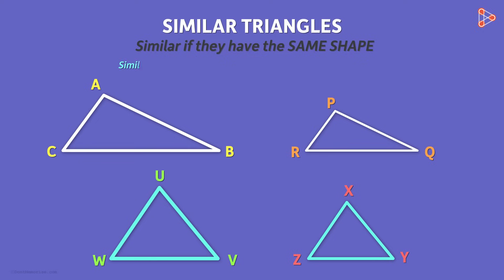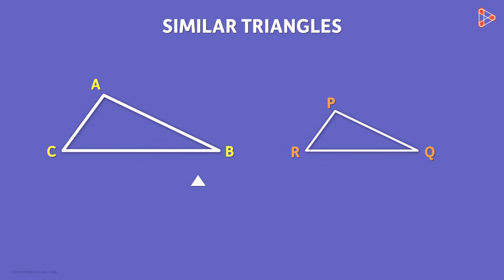What's so special about similar triangles? When two triangles are similar, then the ratios of their corresponding sides are equal. For instance, here, triangle ABC and triangle PQR are similar, so AB over PQ is equal to BC over QR is equal to AC over PR. And this fact is going to help us derive the mirror equation.